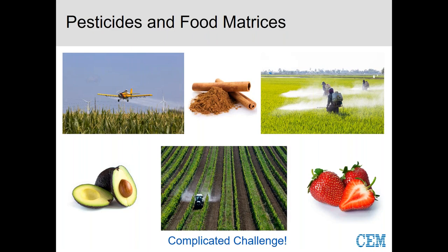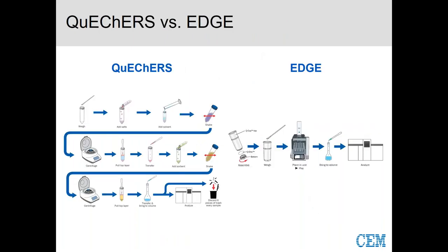When we've got such a complicated challenge, if we have one instrument and one method protocol that can apply, then that's going to be very favorable. Traditionally, the extraction of pesticides from food matrices is done with the QuEChERS method. What I want you to get from this visual is the number of steps involved for QuEChERS versus EDGE. What we're bringing to the table with the EDGE is automation — we're able to eliminate all the multiple manual steps currently required for the QuEChERS method. EDGE is an alternative for the extraction of pesticides from food matrices. It's not doing the exact same chemistry; it's pressurized fluid extraction, a different technology, but it brings automation and other benefits to the table.